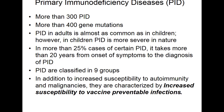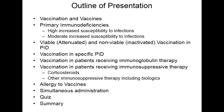Currently, primary immunodeficiencies have been grouped into nine different groups, and we are not going to talk about all of them. In addition to increased susceptibility to autoimmune diseases and malignancies, patients with primary immunodeficiency more commonly have increased susceptibility to vaccine-preventable infections. The immunization schedule will be very different depending on the severity of immunodeficiency.